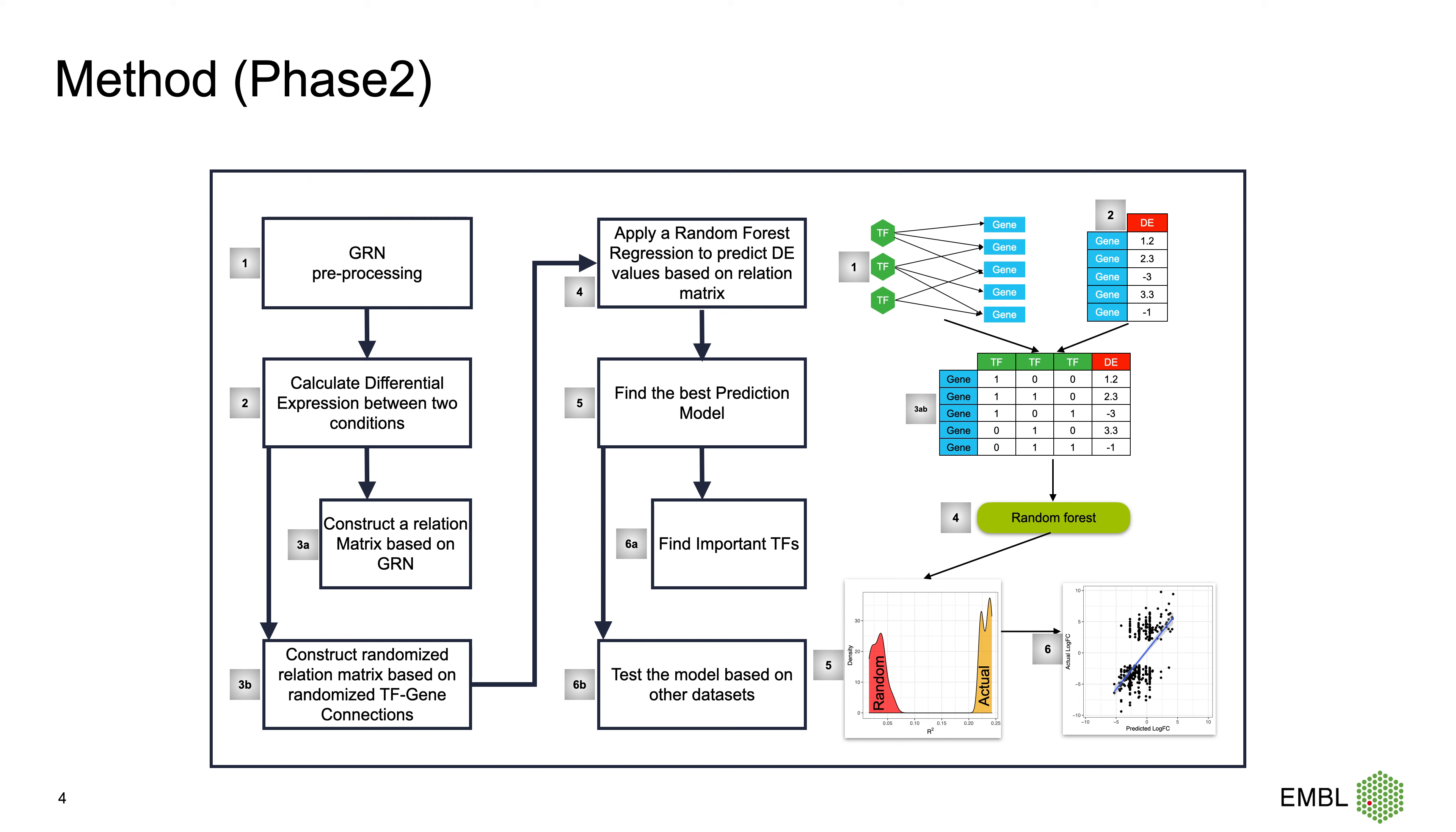In the next phase, we are using the constructed GRN and also RNA-seq data from two different conditions. First, we calculate differential expression. Then we construct a relation matrix based on the GRN. By relation matrix, I mean the connection between transcription factors and genes inside the matrix.